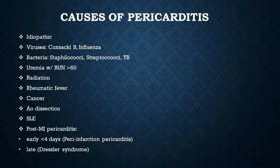Other causes include uremia with BUN greater than 60. An important side note: uremic pericarditis does not cause the typical diffuse ST elevation and PR depressions. Rather, it presents with non-specific T-wave changes, and we treat it with dialysis — not with NSAIDs as we'll discuss shortly.